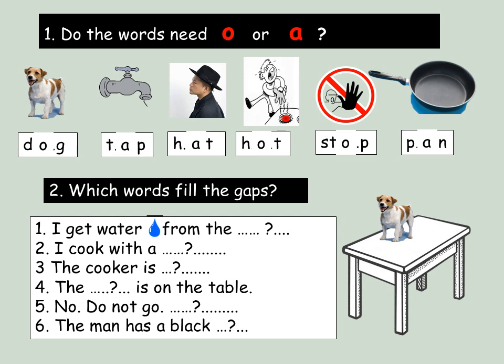Two. Which words fill the gaps? I get water from the tap. I cook with a pan.